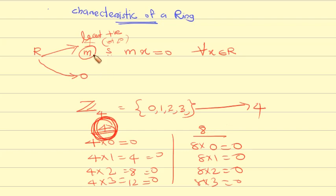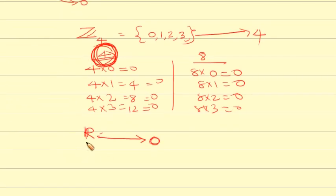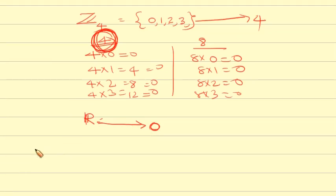For real numbers, 4, 8, 5 — none of these satisfy the condition. Therefore the characteristic is 0.